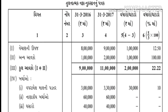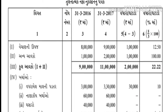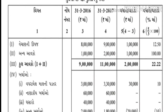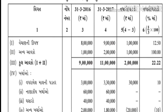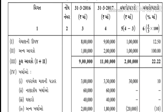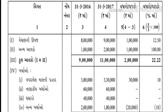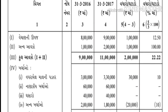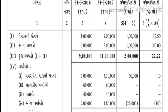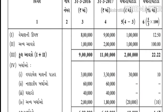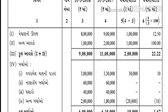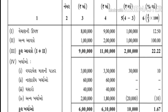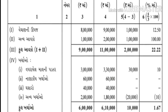અને સૌથી પહેલા આપણે જે ફોર્મેટ તમને પાકો કરાવ્યો છે, આવકો - આપણે જે આપ્યું છે - એક લાખ, મૂકી દઈએ. અને 2017માં છે બે લાખ. 2016માં છે ત્રણ લાખ અને 2017 - 2016માં આપ્યું છે ત્રણ લાખ.